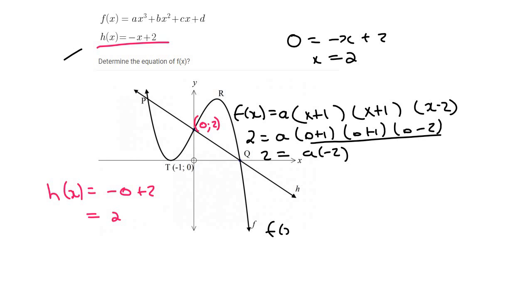And so now I can say f(x) = -1, then I can put the brackets (x+1)(x+1)(x-2).